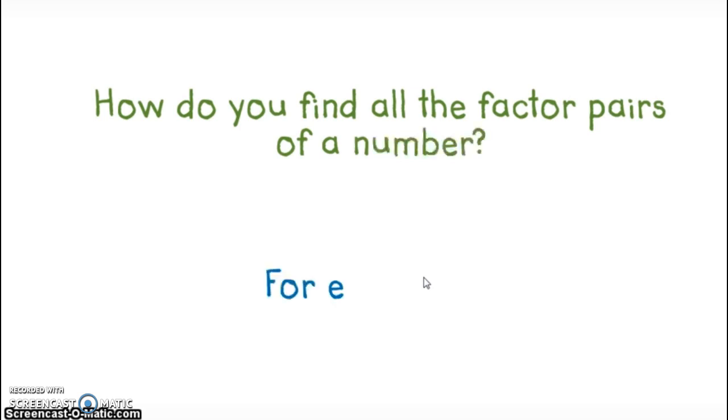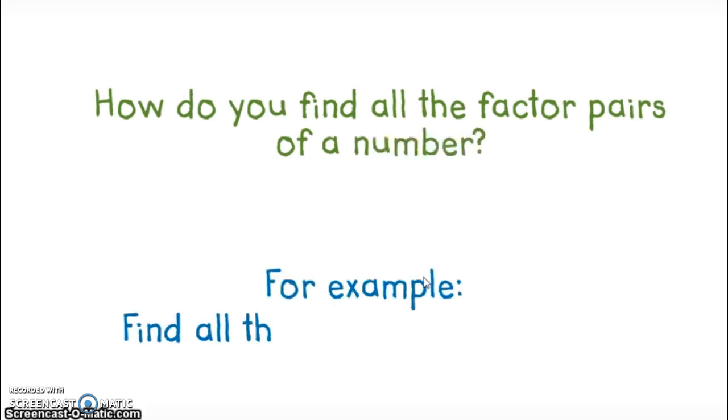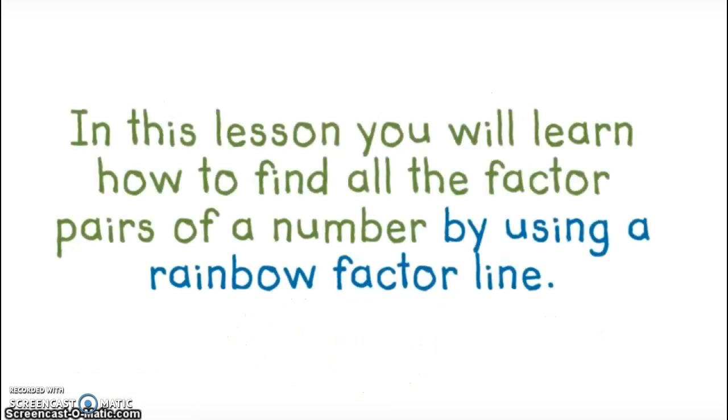So how do you find all the factor pairs of a number? For example, find all the factor pairs of 16. So we're talking about factors. I'm going to show you a couple examples because think about when you learn your multiplication facts. Facts is short for factor. So let's take a look at this. And how we're going to find the factors of a number are going to be by using the rainbow factor line. So in this lesson, you'll learn how to find all the factor pairs of a number by using a rainbow factor line.